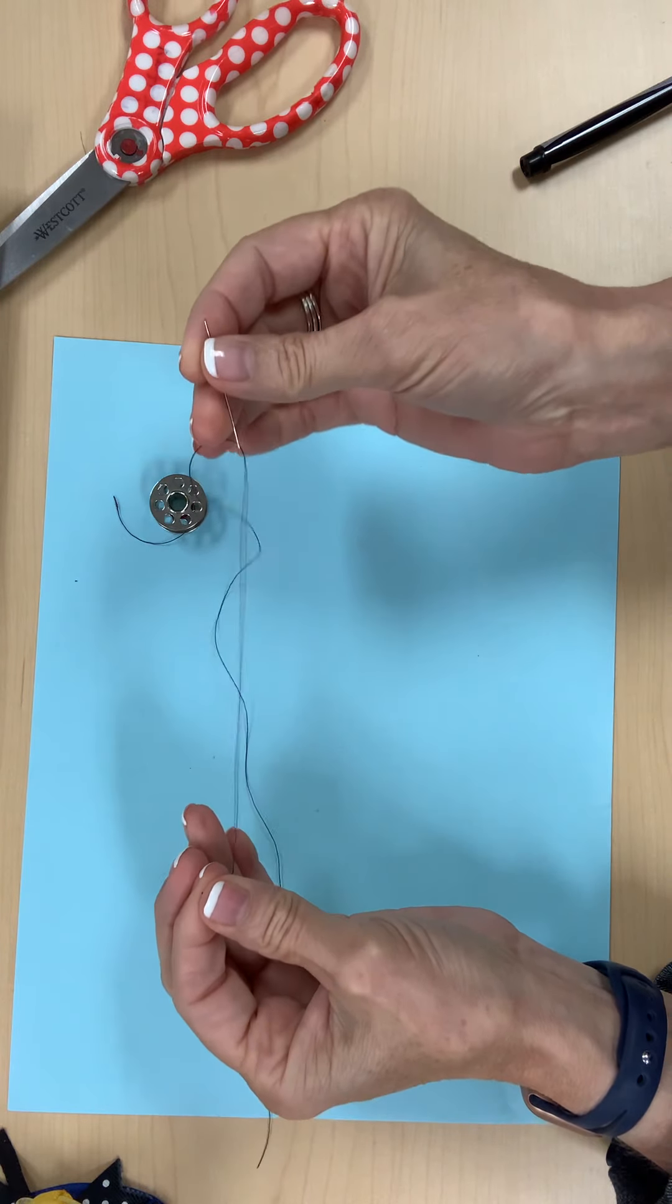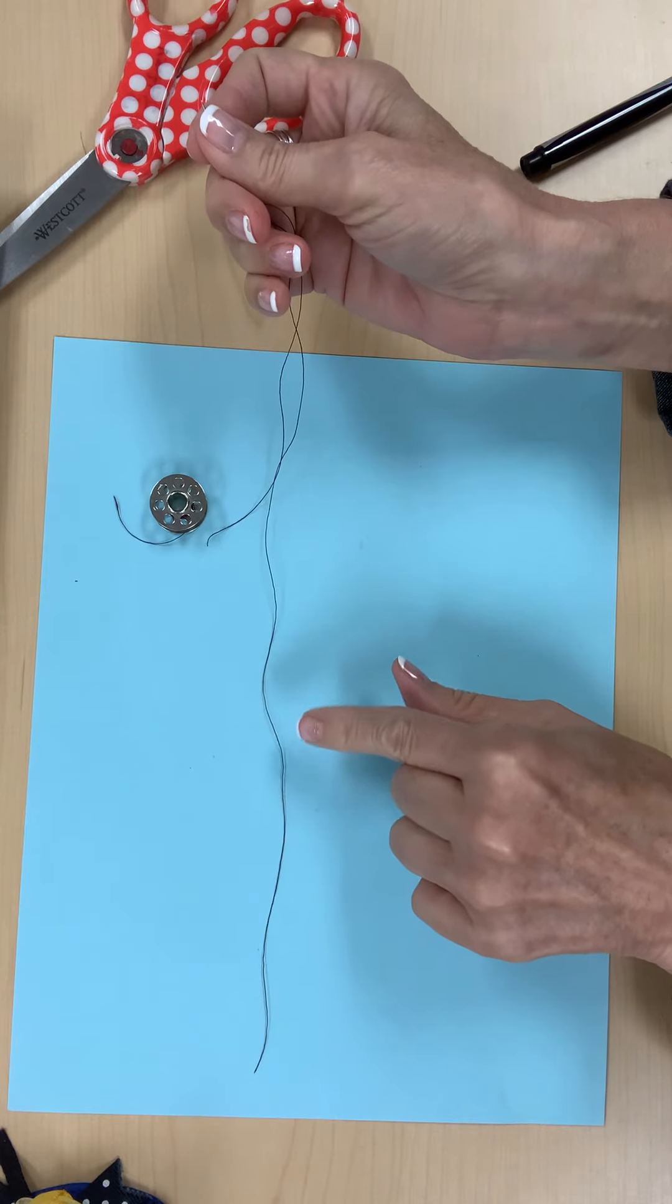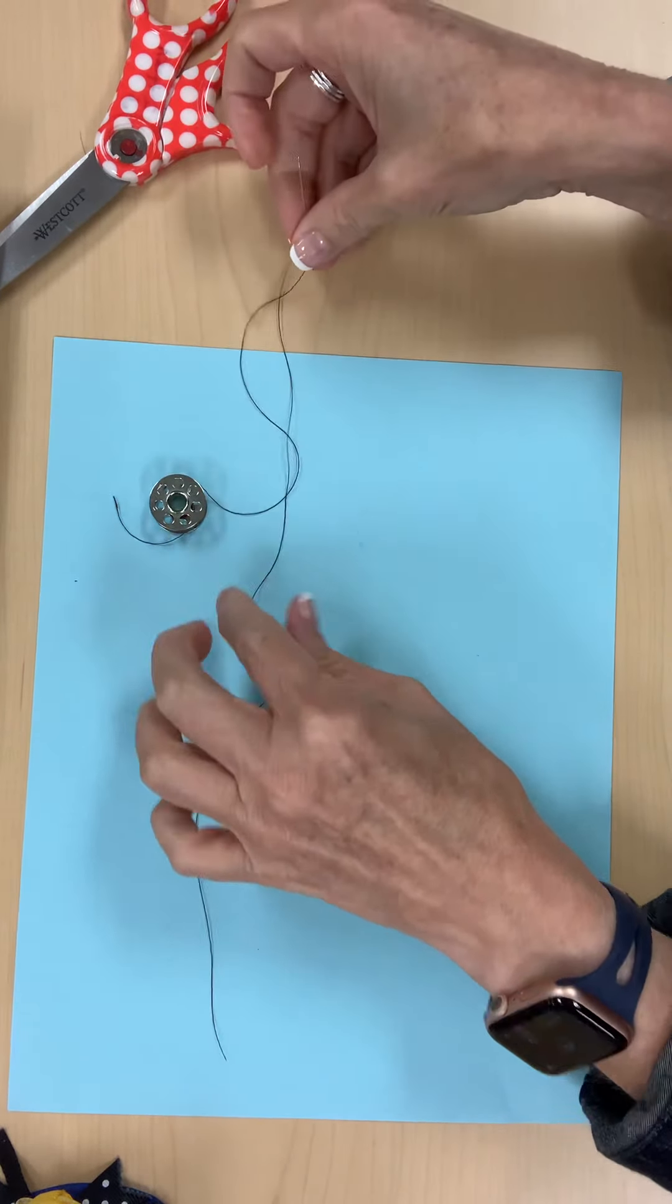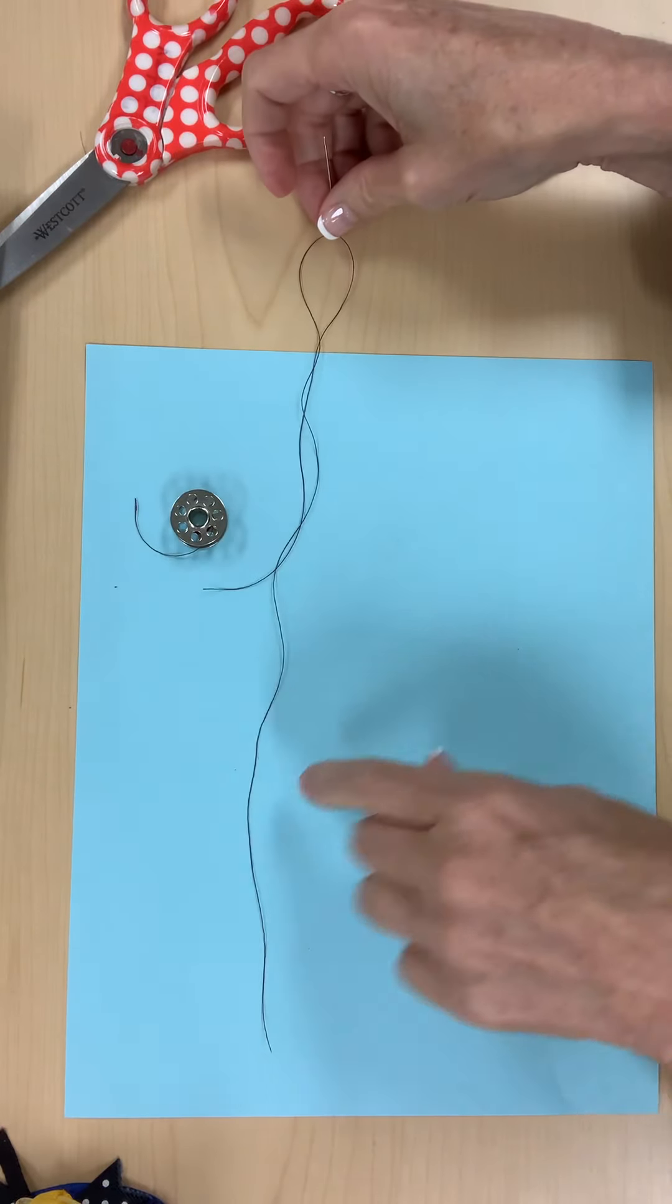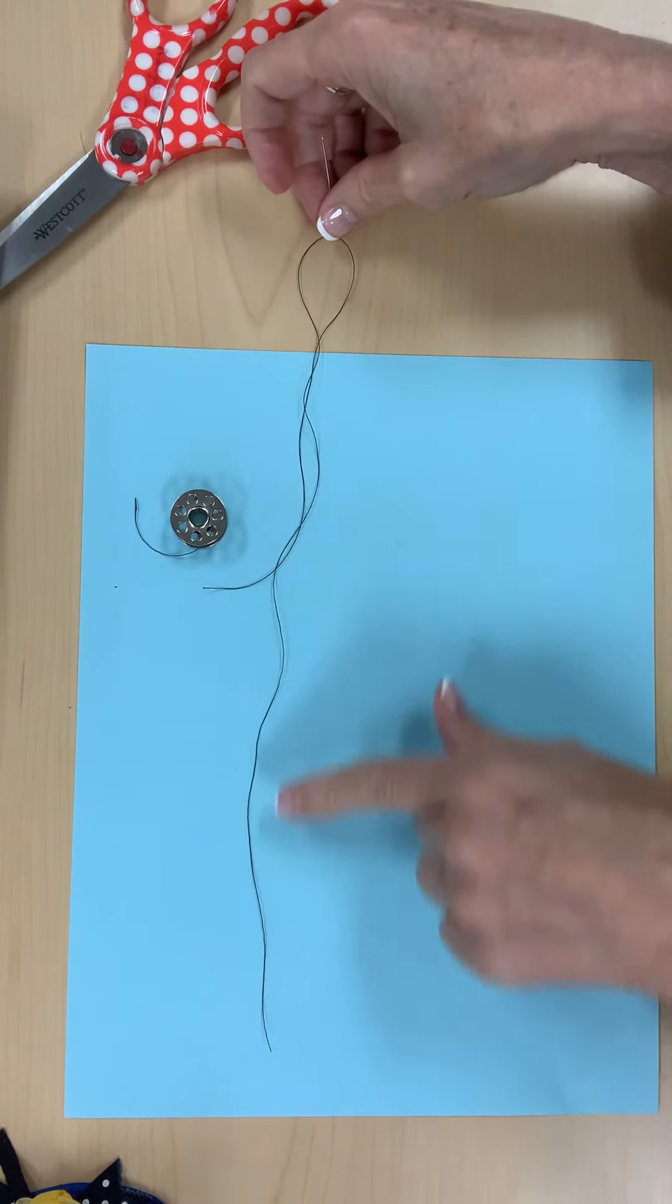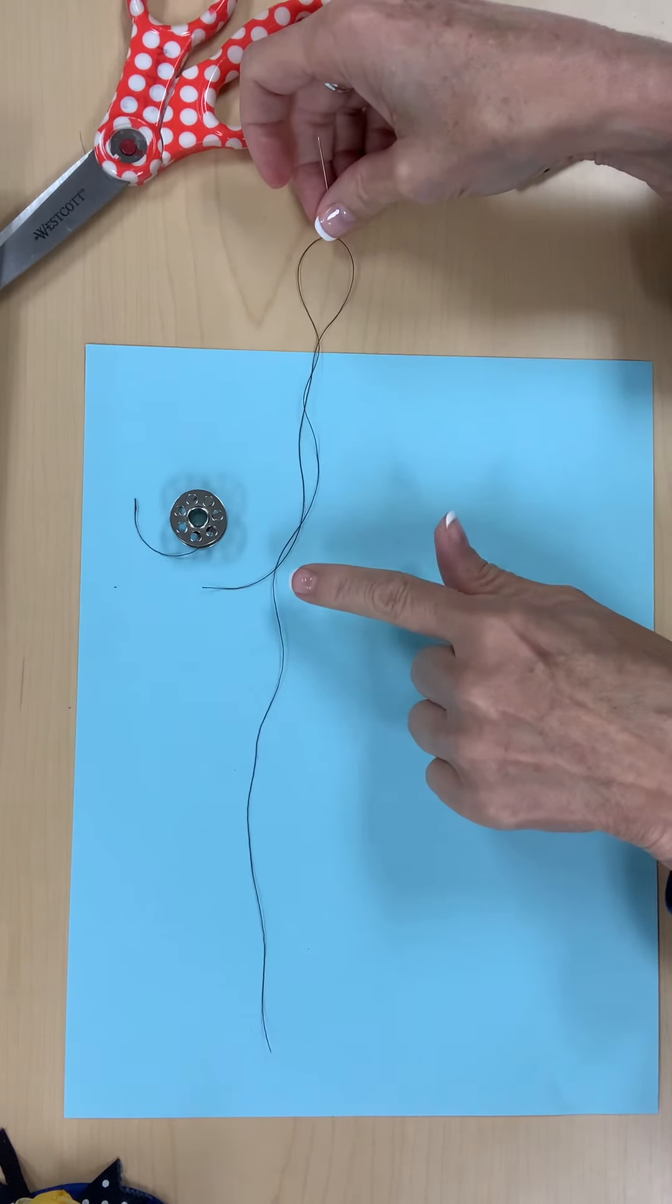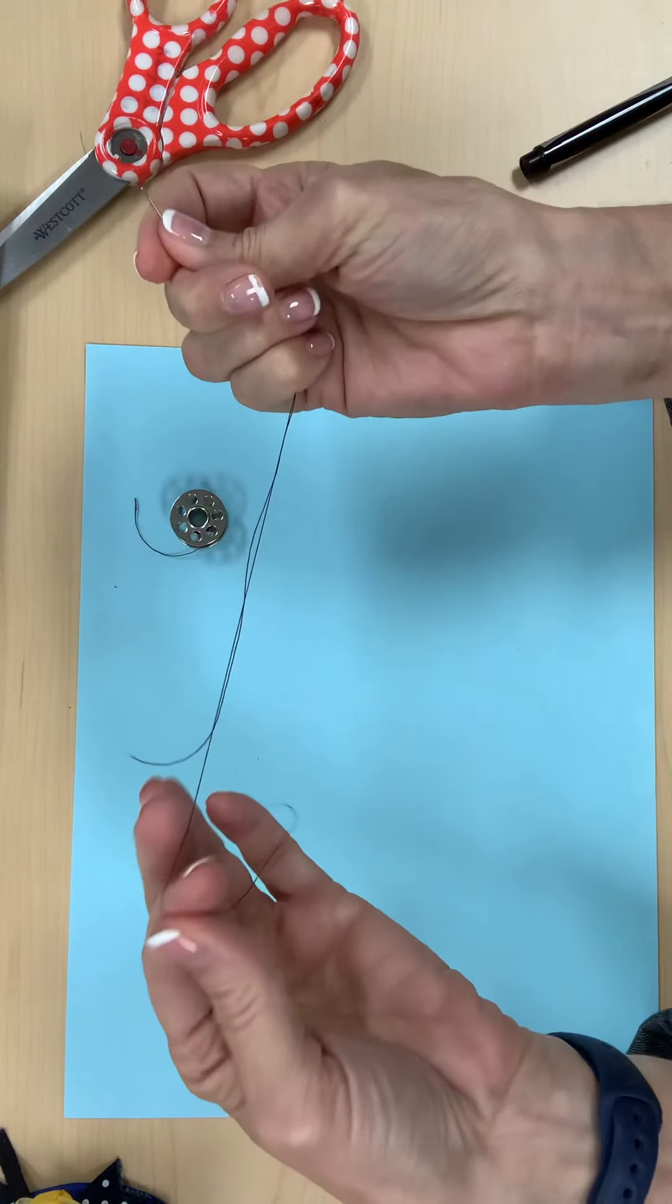When we are hand sewing, we keep it as a single thread. So from here down, this is a single, and then this would be a double. The only time we use a double is when we're hand sewing a button on. But we're going to do a single here, so you're going to keep it like this.